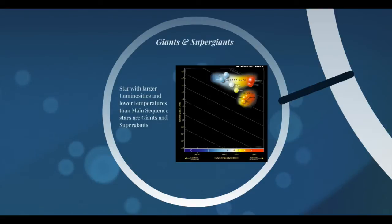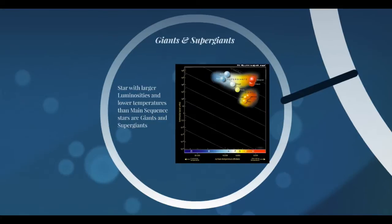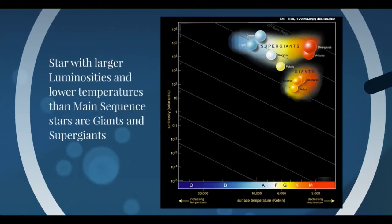There's another group of stars that show up in the top right corner of an HR diagram — these are the giants and the supergiants. These stars have very large radii and very large luminosities, but they have lower temperatures than stars their size should have. A couple of supergiants and giants you may be familiar with are Polaris, the North Star, and Betelgeuse, which is the upper left arm of the Orion constellation.